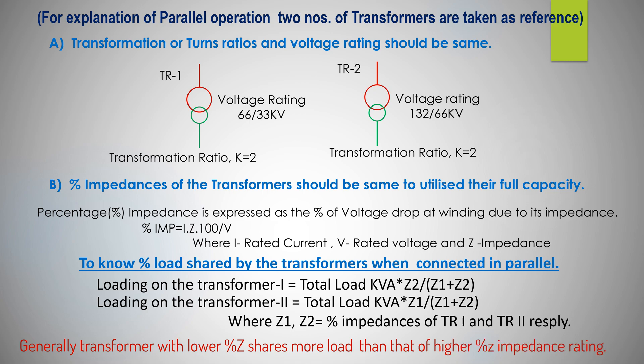If the percentage impedance or ratio of resistance to reactance are not same, there will be no circulating current, but the division of load between the transformers or among the transformers when applied will no longer be proportional to their KVA or MVA ratings. Hence, the capacity of the transformer cannot be fully utilized.